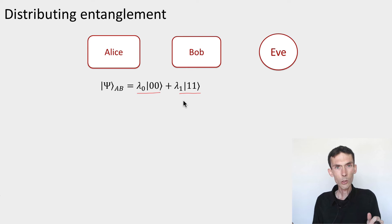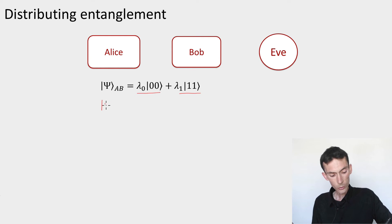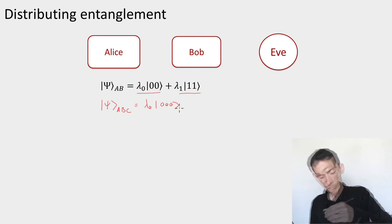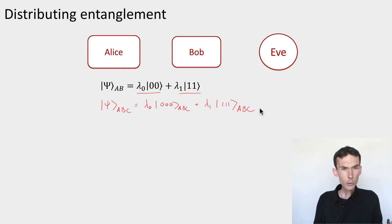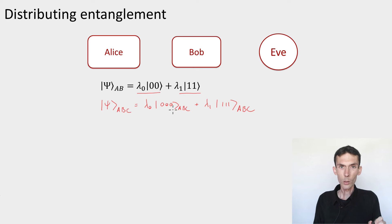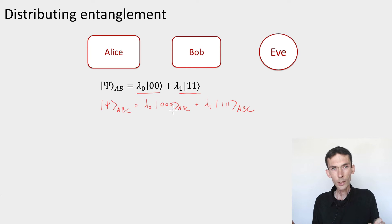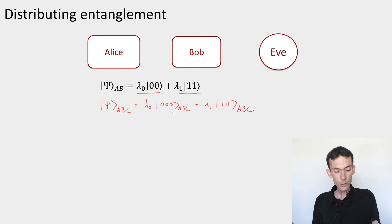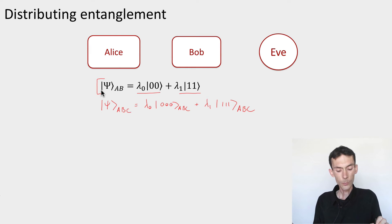We could try the same trick used for the probability distribution: simply copy Bob's qubit to Eve. This would give a state ψ_ABE = λ₀|000⟩ + λ₁|111⟩. It looks like this shares Alice and Bob's correlations with Eve — if Alice and Bob had zero, Eve also has zero, and if they had one, Eve also has one. But this only shares the same classical correlations. The requirement was that the joint state reproduces the original entangled state via its reduced density matrices, so we need to compute those.